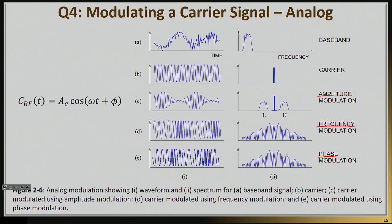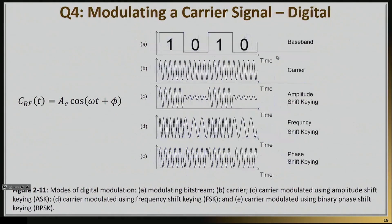In analog schemes you're not encoding bits, but you can take those schemes and transfer them to the digital domain. They're now called amplitude shift keying, frequency shift keying, or phase shift keying, depending on whether you're encoding information in the amplitude, frequency, or phase of a signal.